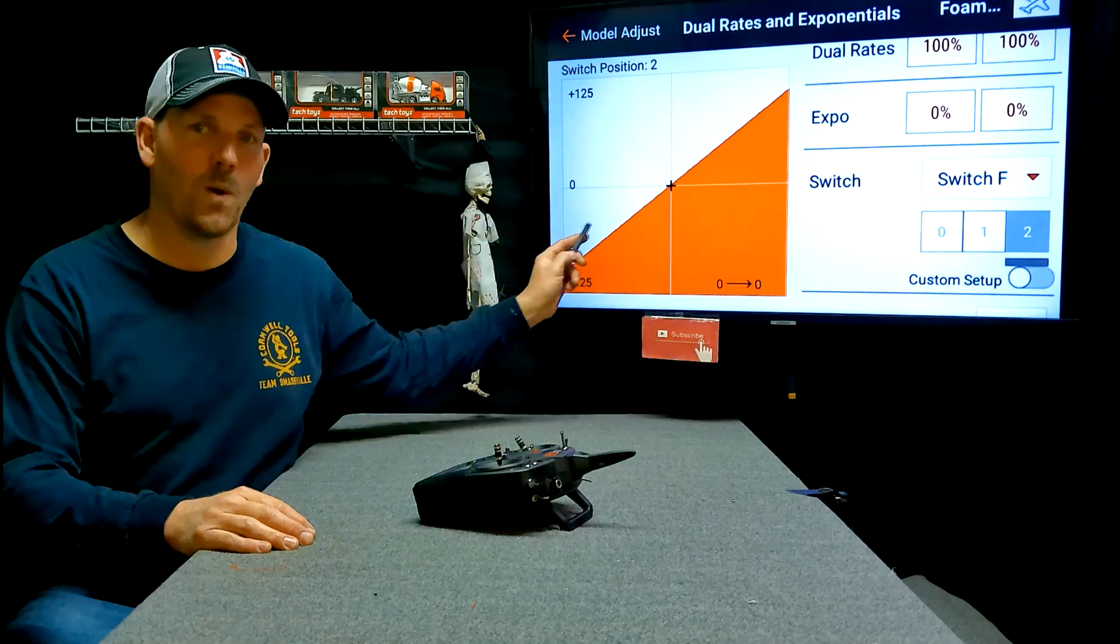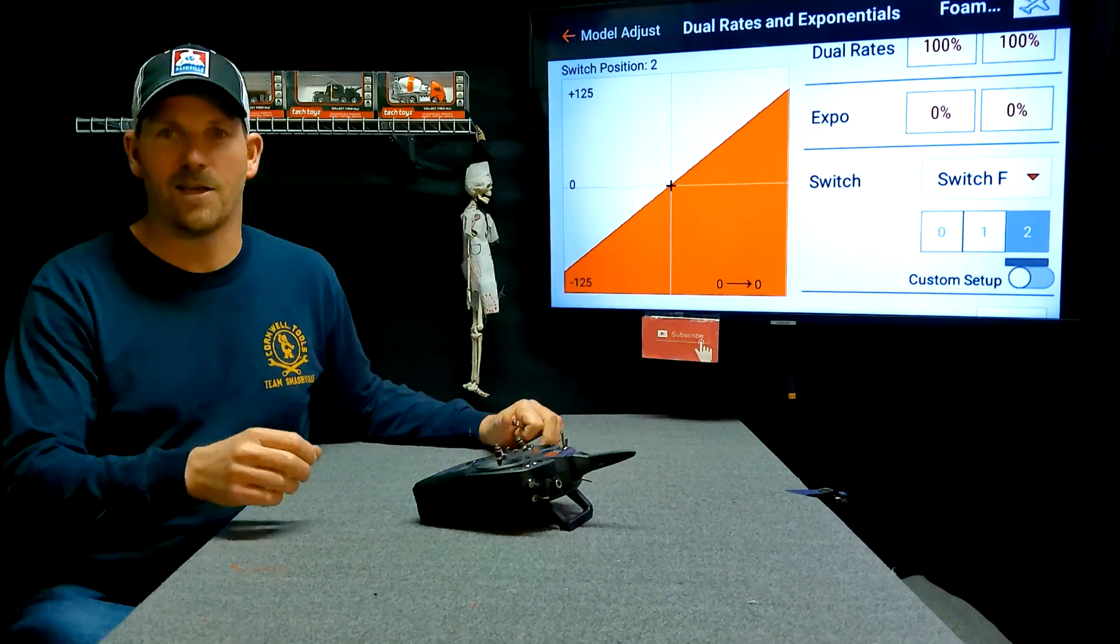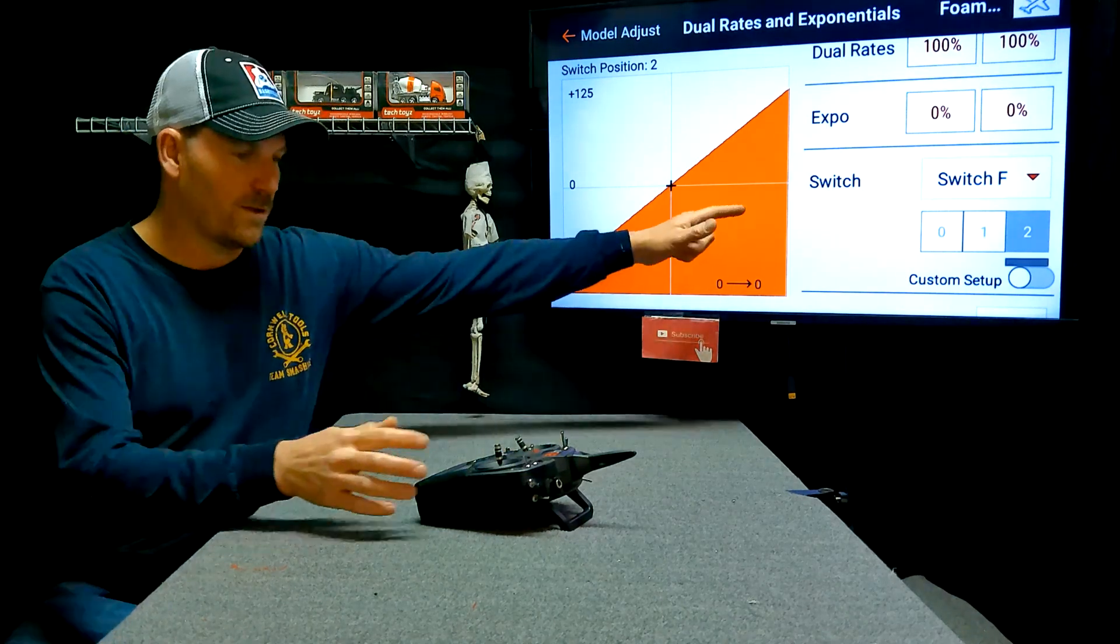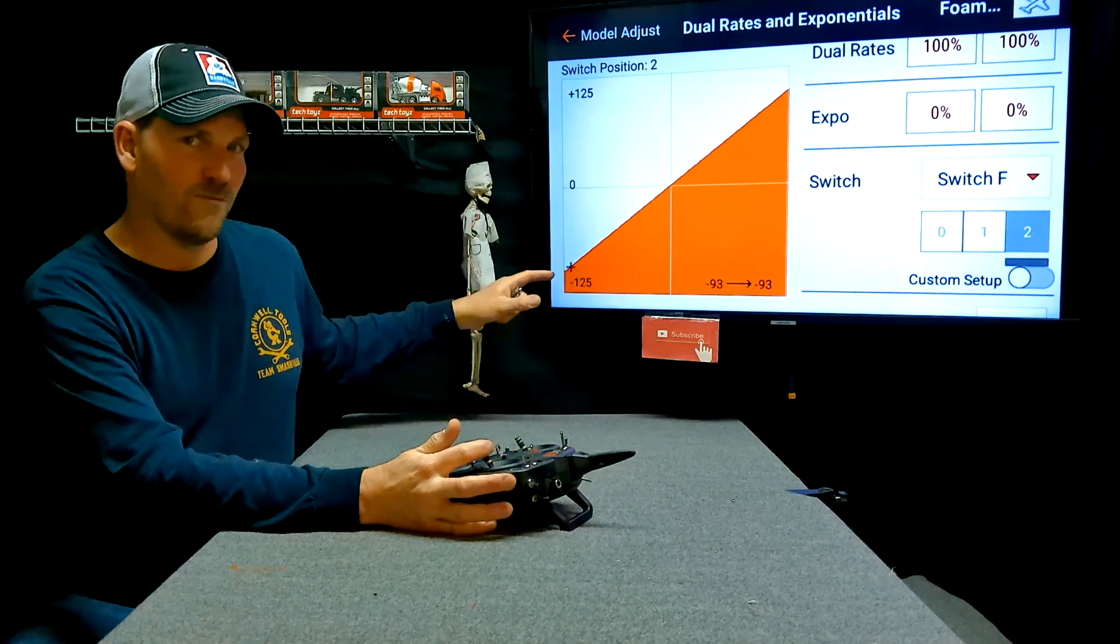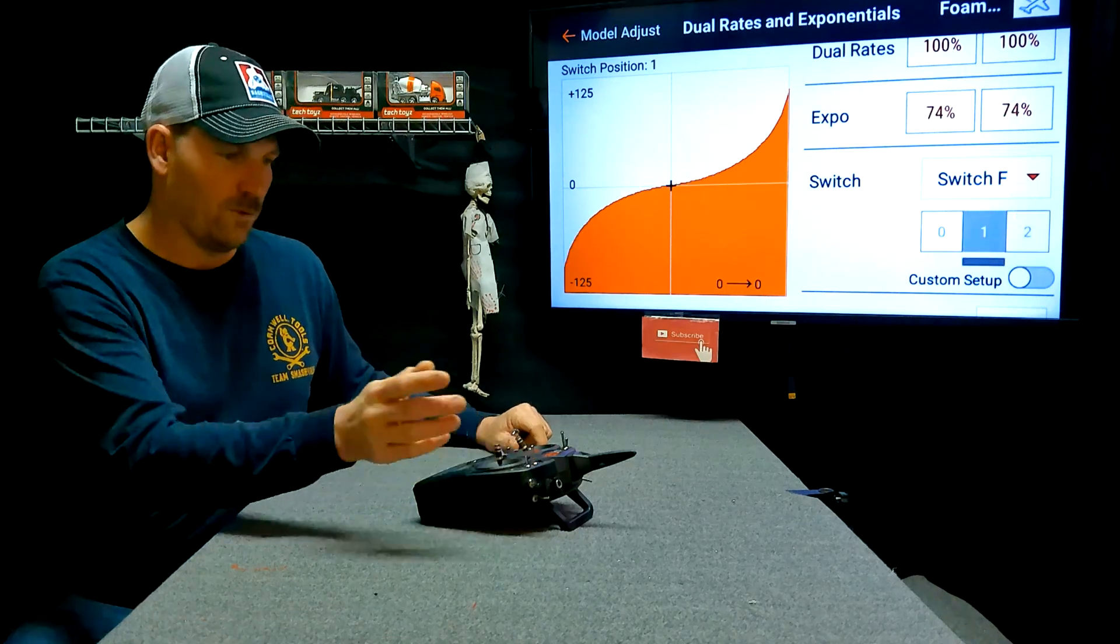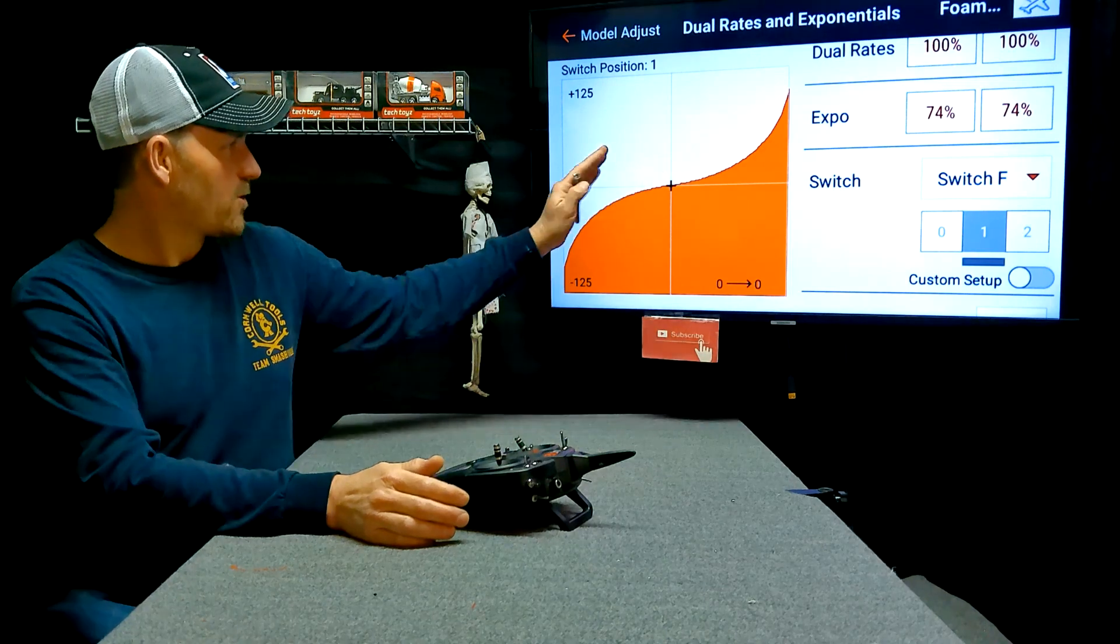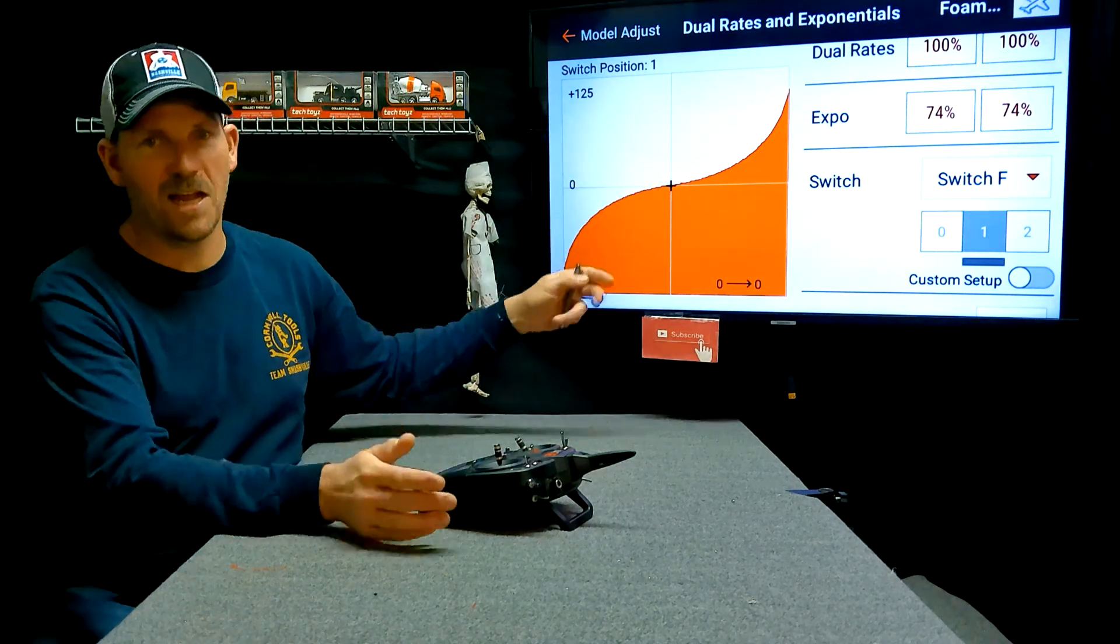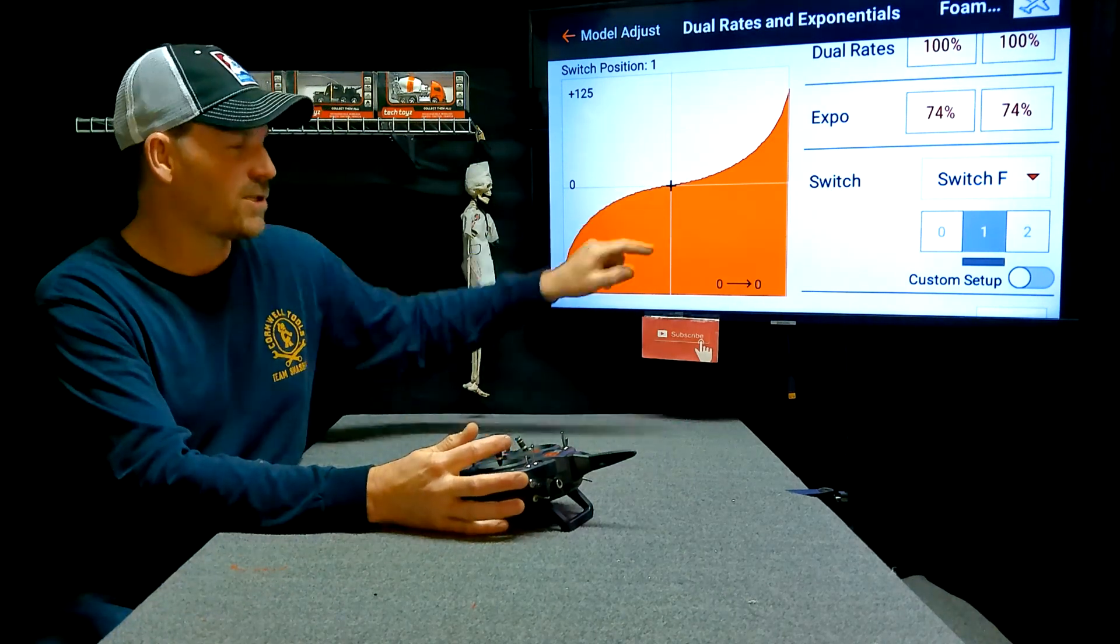So once again, you can look at the line here and you can see no Expo. It's just a straight line of you moving your stick and the servo. So as you move the stick, see the plus moving? It just follows a straight line down to where you want it to go. When you change it to a setting with the positive Expo, you can see it's going to gradually get there. And that curve changes on how you set up your Expo.